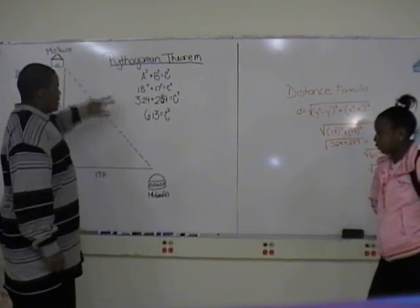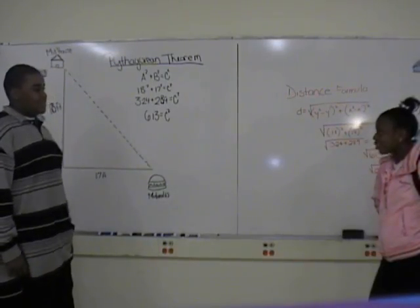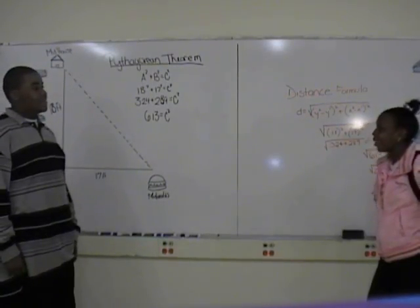So from here to here, the square root of 613. Is there another way to do it? Not that I did. Well, I know.